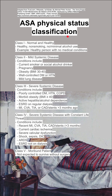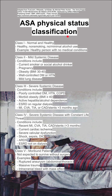Class 5 is a moribund patient — one not expected to survive without surgery. Some examples are a ruptured aneurysm, such as an abdominal or thoracic aneurysm, a massive trauma, intracranial bleed with mass effect, ischemic bowel with cardiac issues, or multiple organ dysfunction.